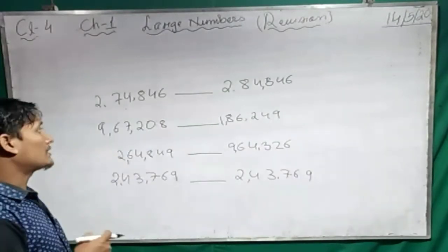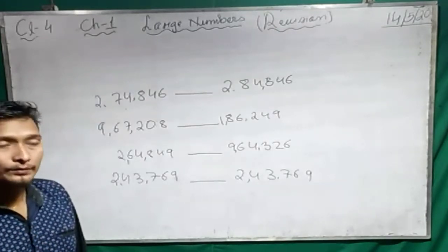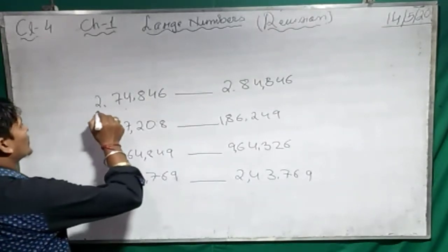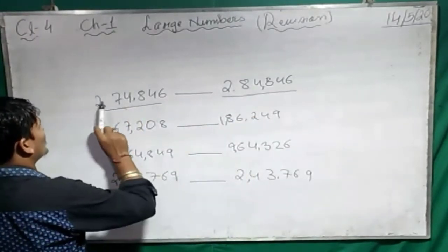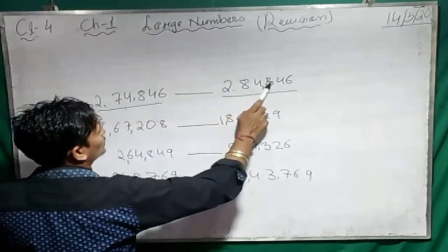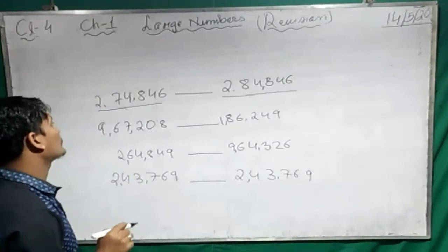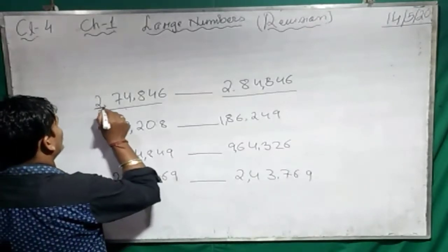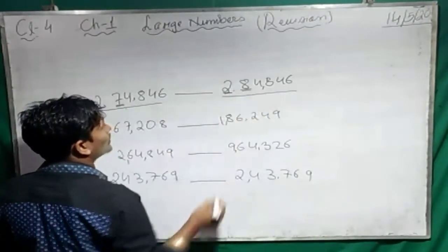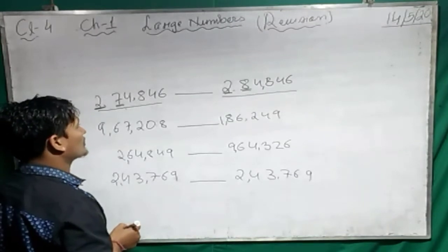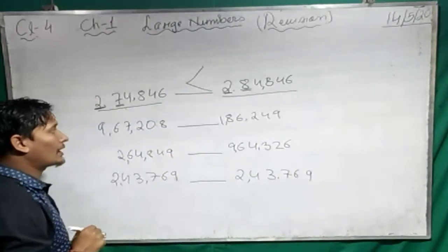Let's find out how to compare a number. First of all, we have to see the number of digits. Both numbers here have 6 digits each. Now see the first digit — this is 2 and here also 2. Next digit: this is 7 and this is 8. Which one is bigger? 8 is bigger. So we put the smaller-than symbol, because the open mouth always shows the bigger number — the open mouth is towards 8.